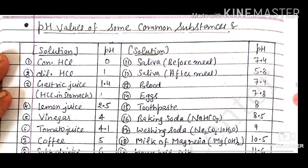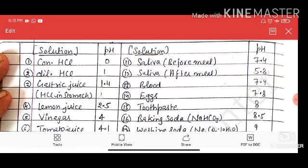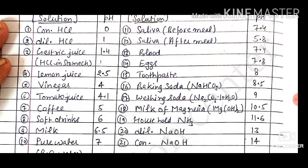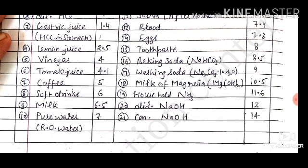Next are pH values of some common substances, which is part of our syllabus. Concentrated HCl has pH 0, dilute HCl is 1, gastric juice (HCl in stomach) is 1.4, lemon juice is 2.5, vinegar is 4, tomato juice is 4.1, coffee is 5, soft drinks are 6, and milk is 6.5 — so milk is also slightly acidic.